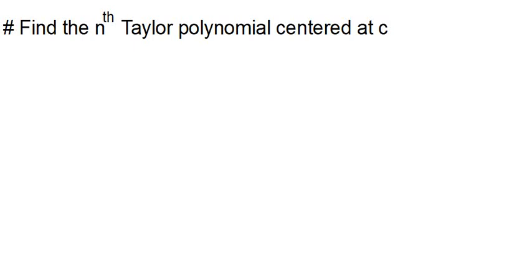We're going to look at some examples under Taylor series where we have to find the nth Taylor polynomial centered at C. Recall from the previous video on Maclaurin polynomials: a Maclaurin polynomial or series is nothing but a Taylor series centered at 0, where C equals 0. For a Taylor series, C is going to be some other value — it's centered at some point. Our Taylor series appears like this.